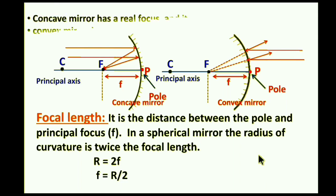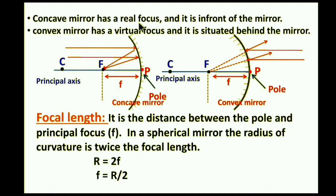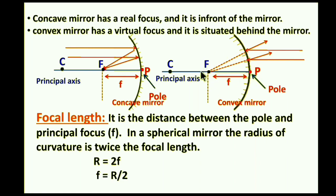A concave mirror has a real focus — the focus F is present in front of the reflecting surface. A convex mirror has a virtual focus — it is an imaginary point situated behind the mirror.